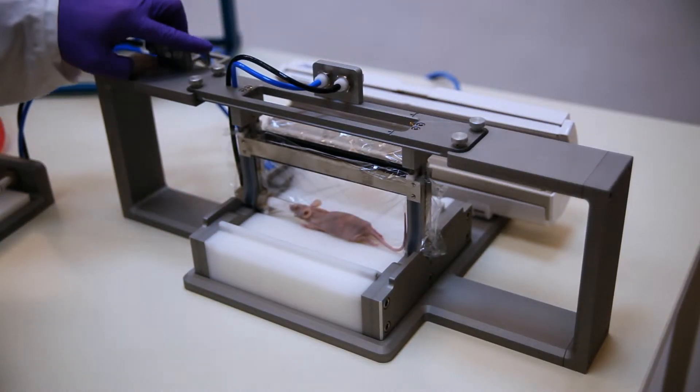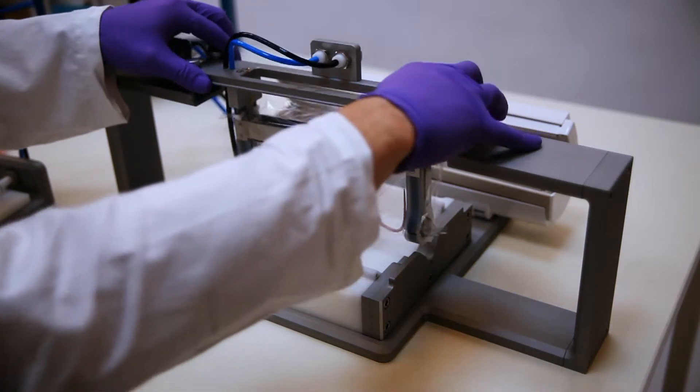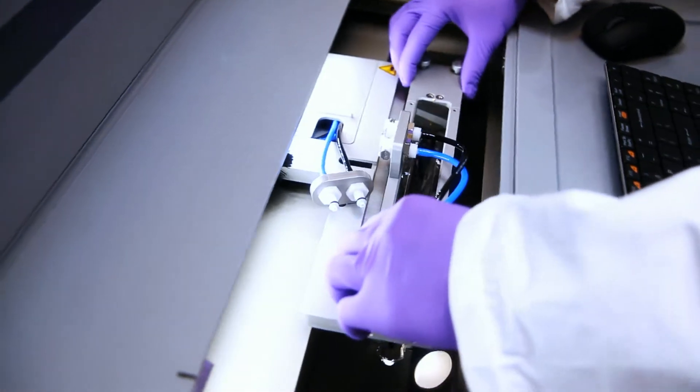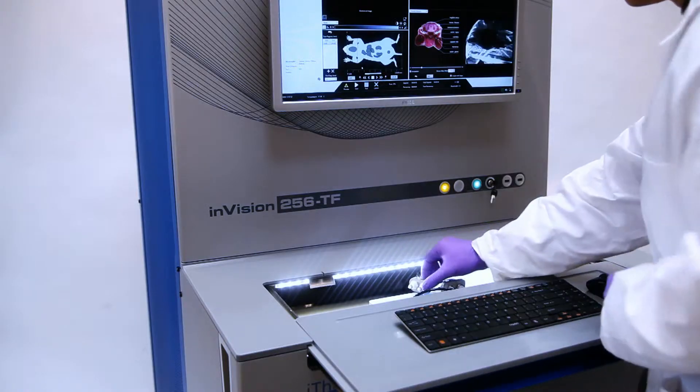Anesthesia is disconnected from the preparation station and the animal holder is transferred to the imaging system. The holder is placed into a tray inside the system's imaging chamber.